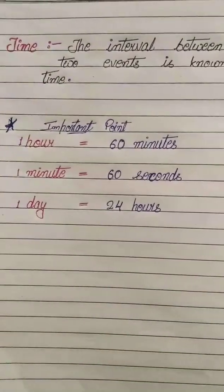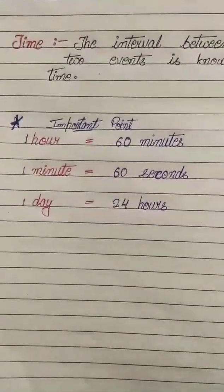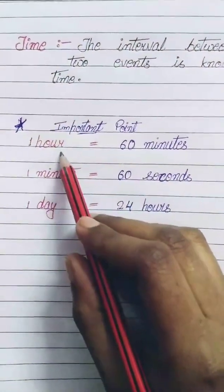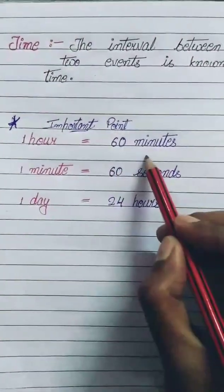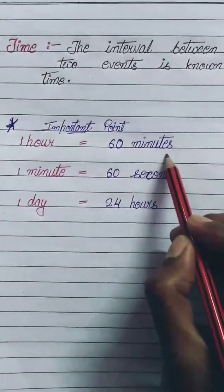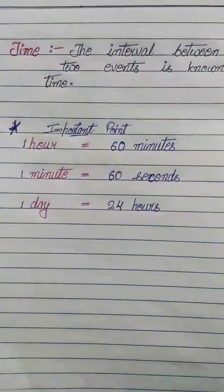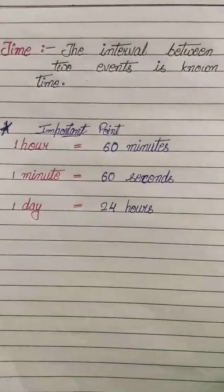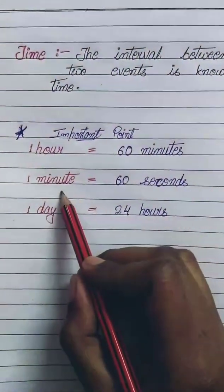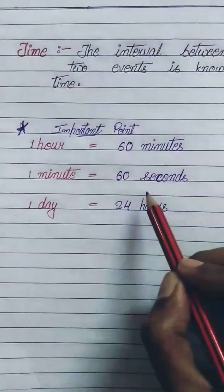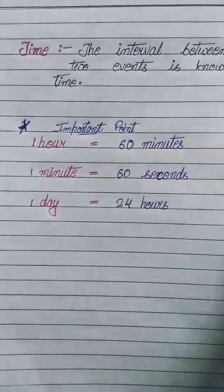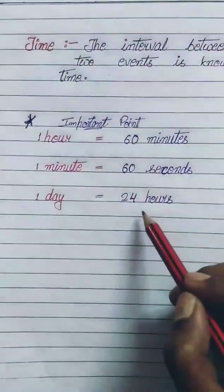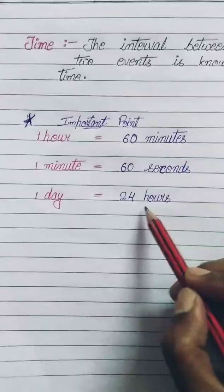Now let's see some important points. One hour equals 60 minutes — meaning in one hour there are 60 minutes. In one minute, there are 60 seconds, and in one day, there are 24 hours.